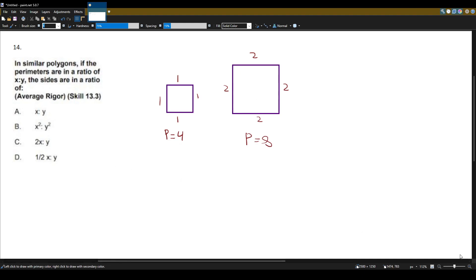So the ratio, let's talk about just the ratio of the perimeter. The ratio of the perimeter is x, y, as the problem states. But what's x and what's y? It's going to be 4 to 8, or 1 to 2.